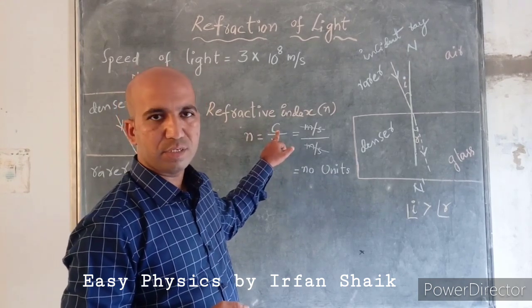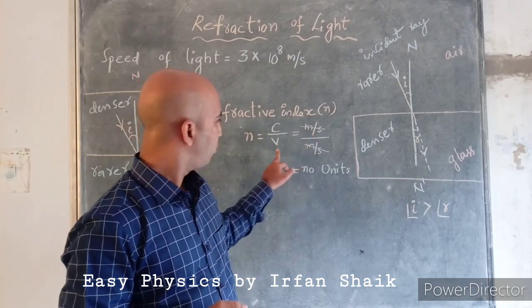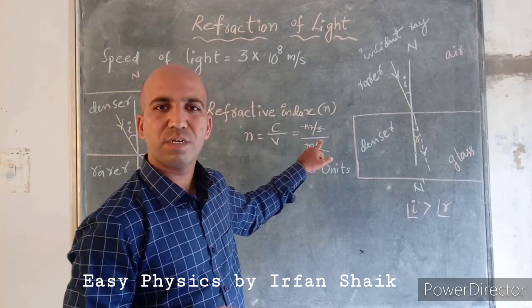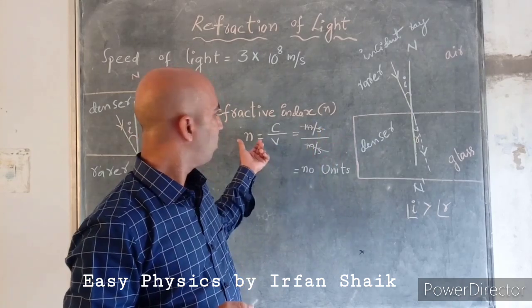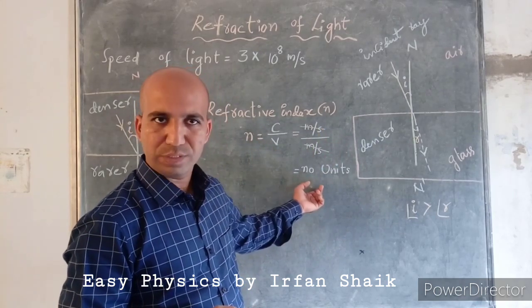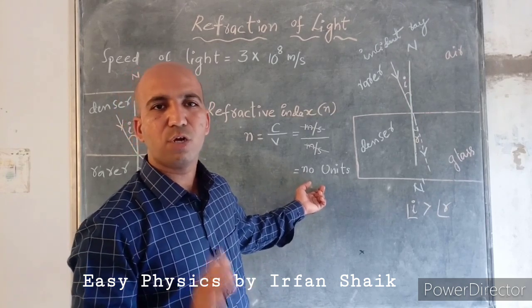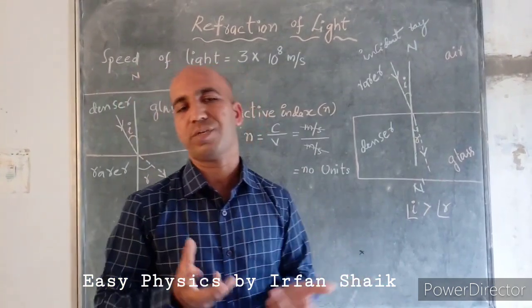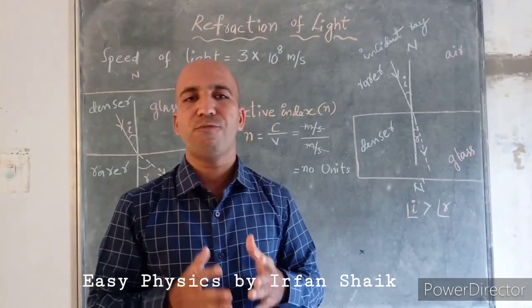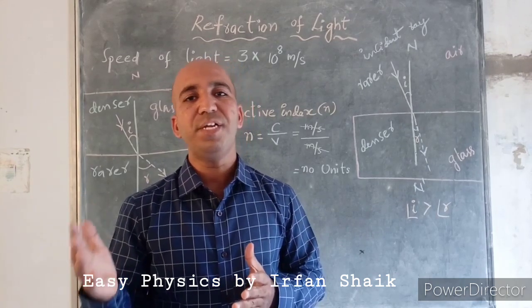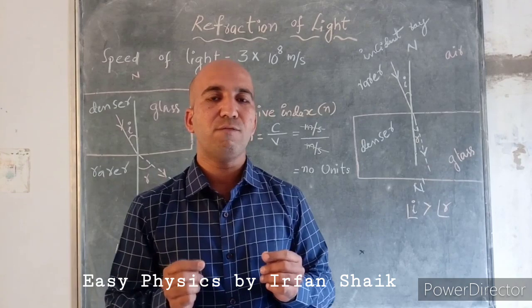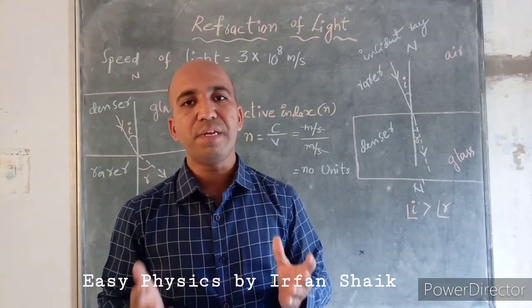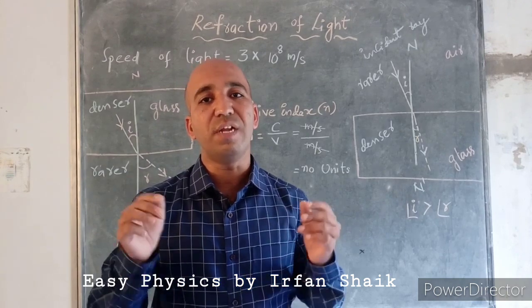The speed of light in vacuum has units of meters per second, and the speed of light in a medium also has units of meters per second. These two units cancel out, which means the refractive index has no units — it is a dimensionless constant. As the refractive index of a material increases, the speed of light in that material decreases. A material with a very low refractive index allows light to travel very fast, while a material with a very high refractive index slows light down significantly.